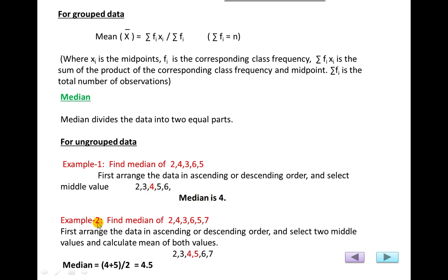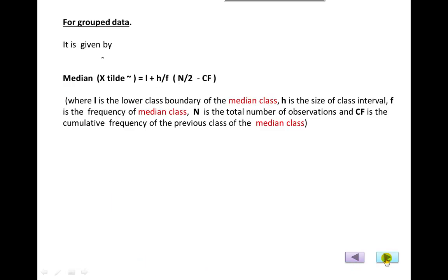Second example: find the median of 6 observations. When there is no single center value, arrange the data in ascending order: 2, 3, 4, 5, 6, 7. Select the two middle values and calculate their mean. The median of these 6 observations is 4.5.